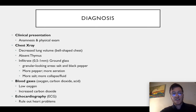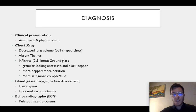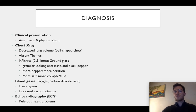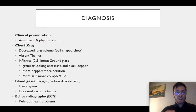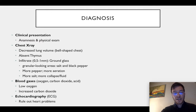For the diagnosis of IRDS, always look at the clinical presentation, anamnesis, and physical examination. The second most important is a chest X-ray where you can see decreased lung volume, a bell-shaped chest, an absent thymus, and infiltrates of half to one millimeter called ground glasses. On the chest X-ray, normally the air in your lungs is black, but now you see more granular-looking areas — a pepper-and-salt appearance — where the black areas stand for aeration and the white areas stand for collapse and fluid. You can also check the blood gas, where you'll see low oxygen and high carbon dioxide, and lastly you can do an ECG to rule out any heart problems.